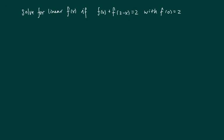We're given that function f is linear, that's one clue, and it's related in this fashion with f of 0 equal to 2. So let's do a quick analysis and see how we go about solving this one.